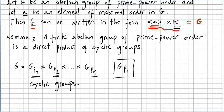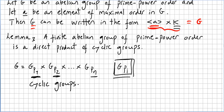So we have proved that G is a direct product of cyclic groups of prime power order. The only thing remaining to prove is that these factors are unique — that is, there is only one way, up to isomorphism and up to rearrangement of factors, to write each G(pi) as a direct product of cyclic groups. That leads us directly to Lemma 4.